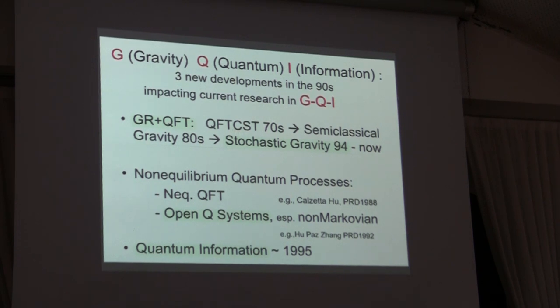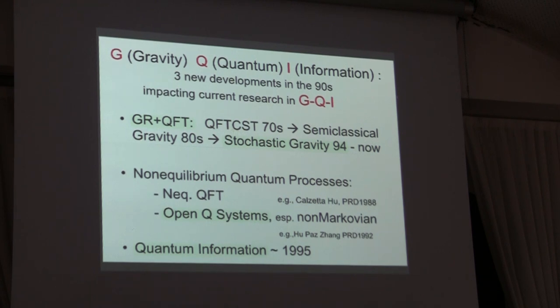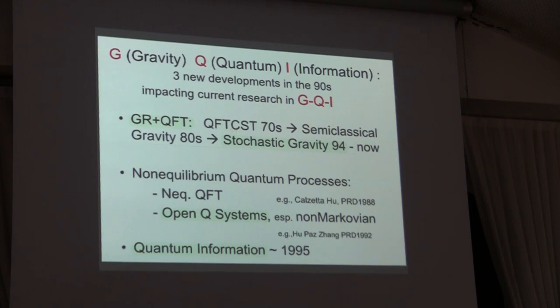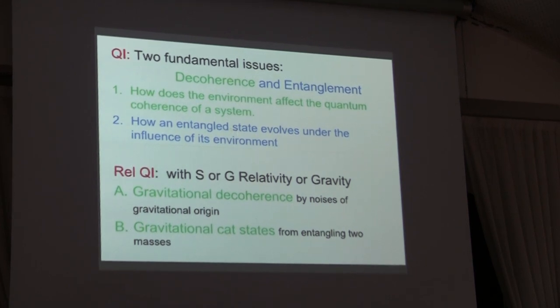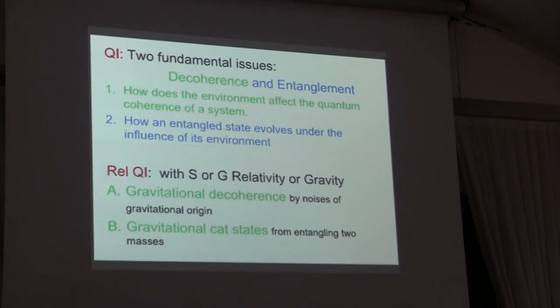But there's other important development which made this threefold combined consideration, the G, the Q, and I possible. One is the development of non-equilibrium quantum processes, in particular via quantum field theory. And the open quantum systems, which now is also applied to early universe cosmology. In particular, I'd like to point out the non-Markovian aspects, because most of the stochastic processes that we learn are applied to in the field of quantum optics.